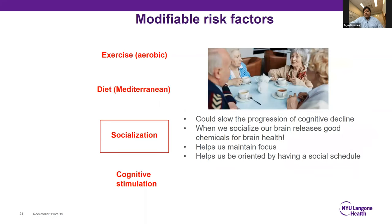Another important lifestyle factor is socializing. There's evidence it can actually slow the progression of cognitive decline. When we socialize, our brain releases good chemicals and hormones for brain health. It helps us maintain focus and stay oriented by having a social schedule.